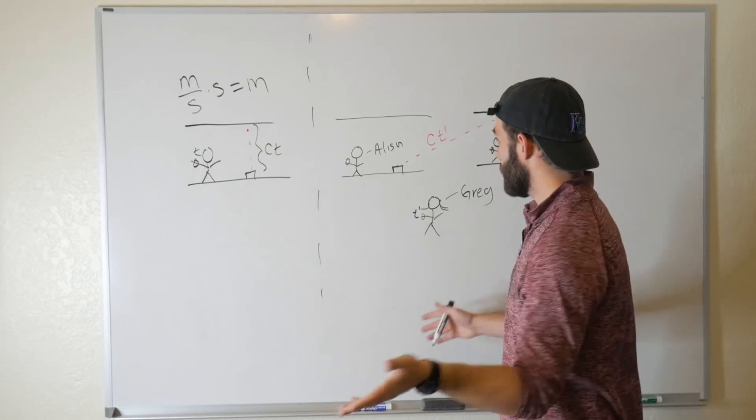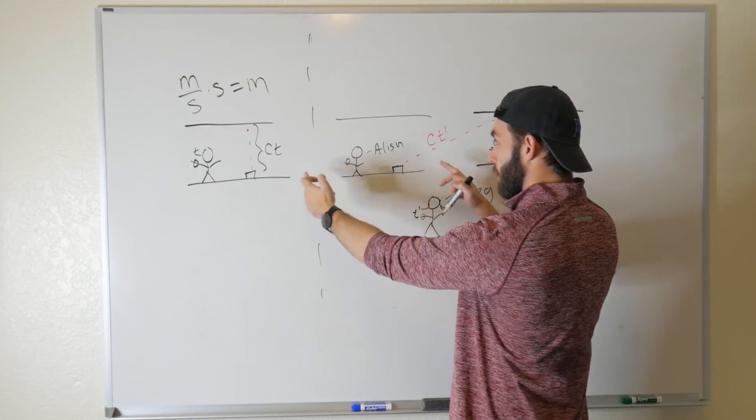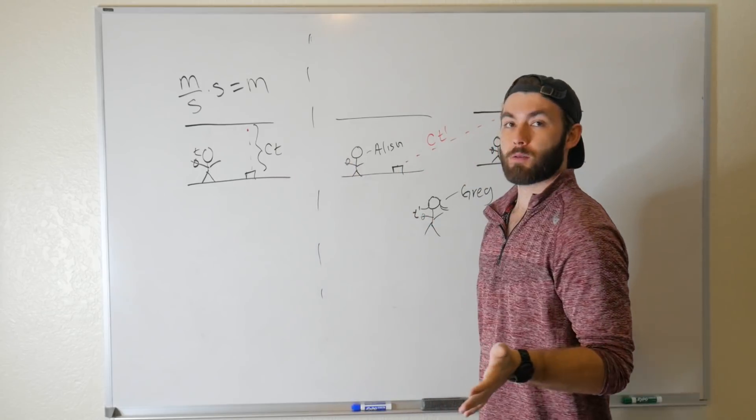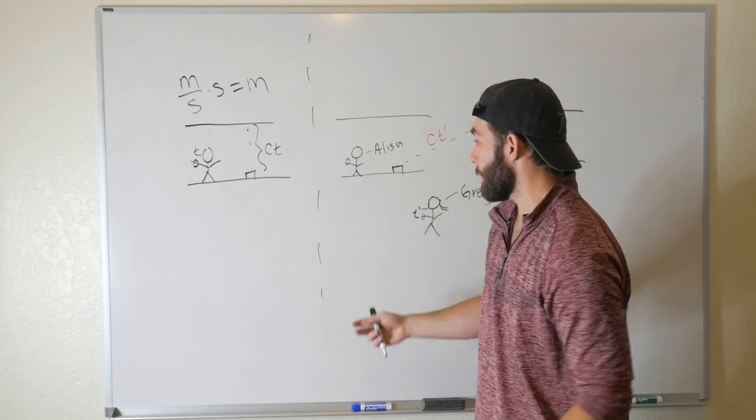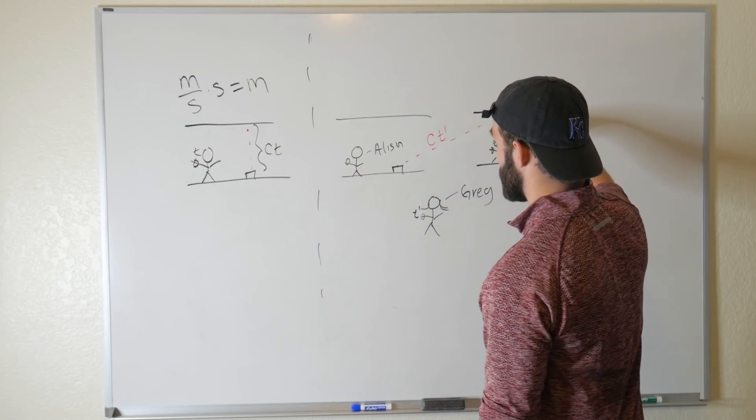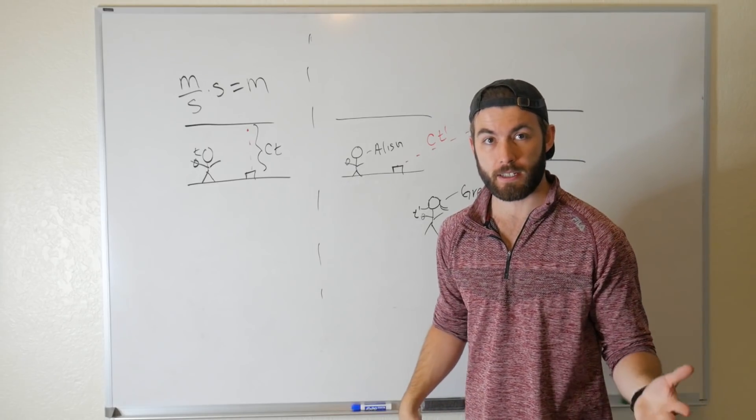So these two people won't be disagreeing on how fast light is, they'll be disagreeing on how long it took the event to happen, how long it took the photon to reach the top, and this is the premise behind time dilation.